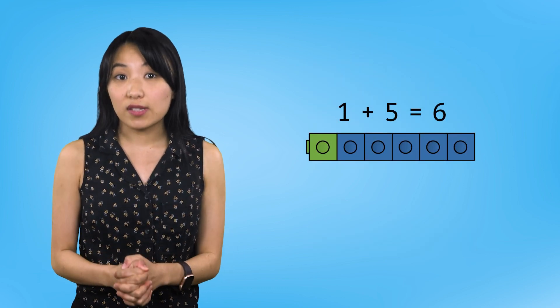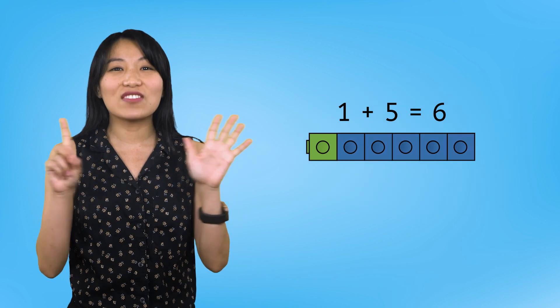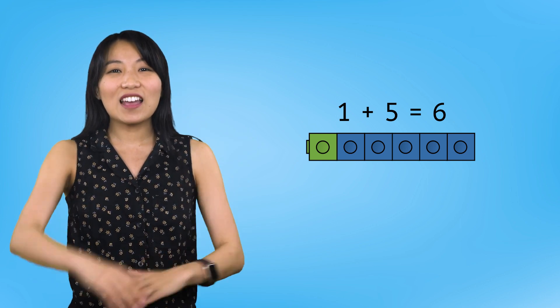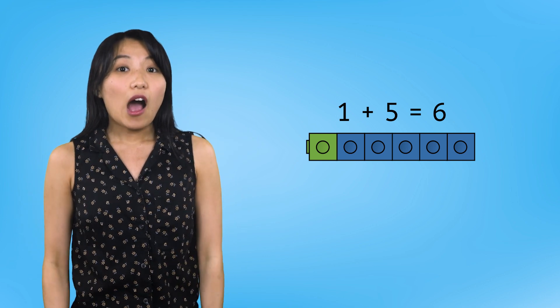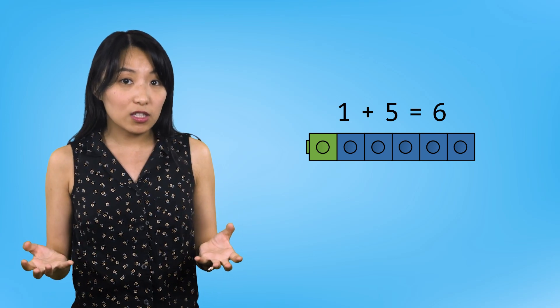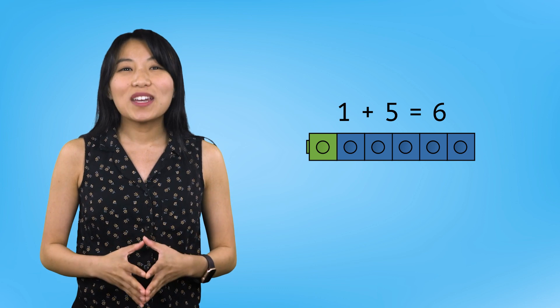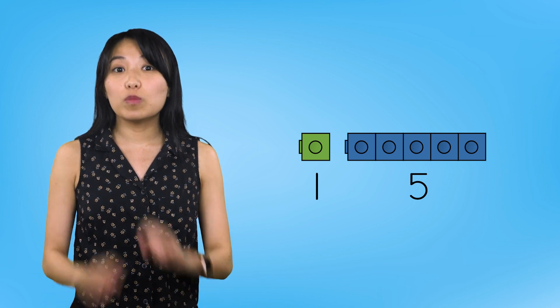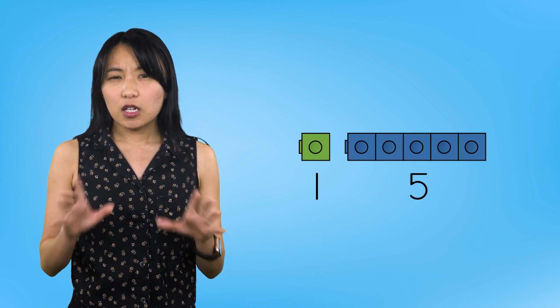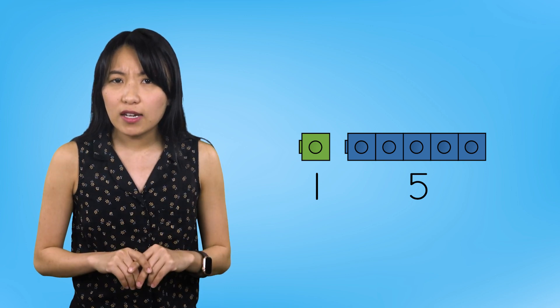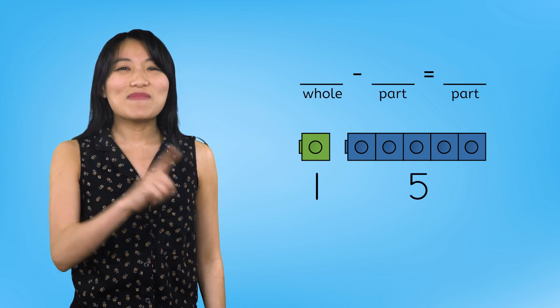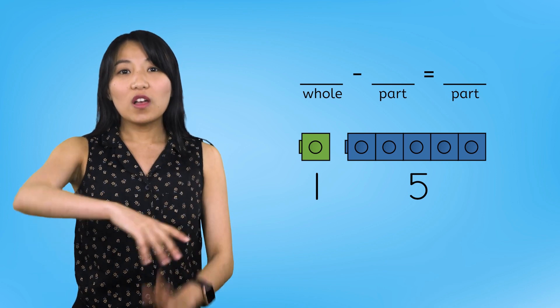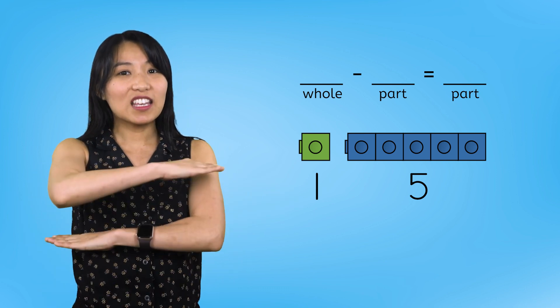We composed the number 6 by putting 1 and 5 together. The addition sentence says 1 plus 5 equals 6. Our job is now to decompose it or break it apart. All we need to do is separate the two parts. There we go. So now we took one cube away from the set of 6. How can we write a subtraction sentence to match this? Remember, subtraction sentences always follow a pattern. Whole minus part equals part.